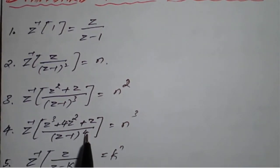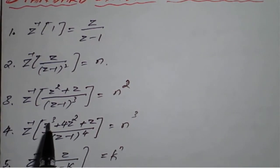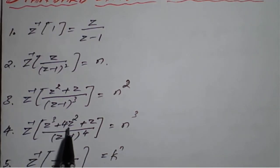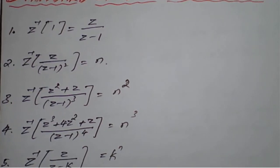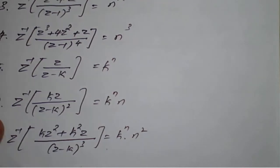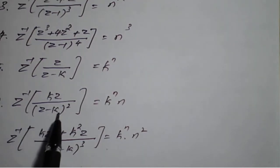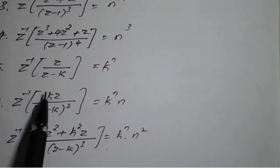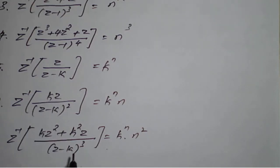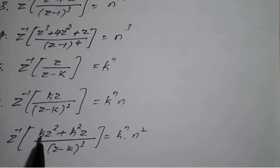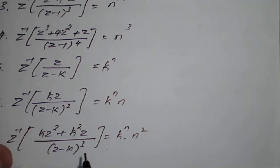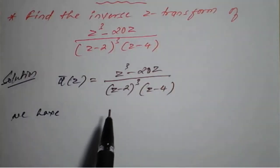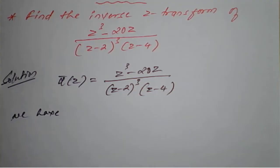If (Z-1)⁴ is there, the numerator is Z³ + 4Z² + Z. Similarly, in terms of K: if (Z-K)² is there, the numerator can be framed as KZ; and if (Z-K)³, the numerator is KZ² + K²Z. Keep these formulas in mind.